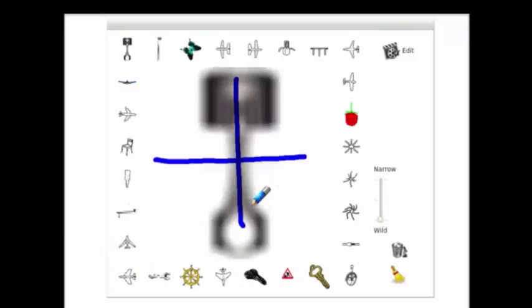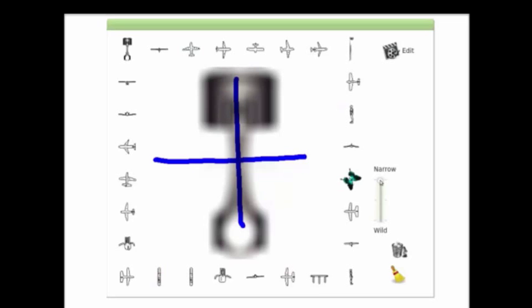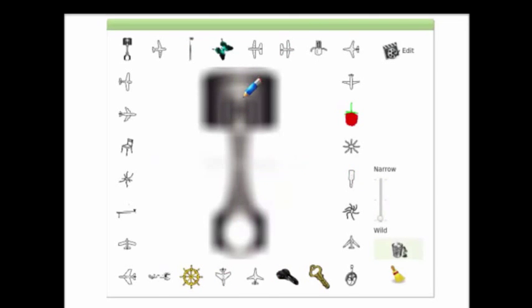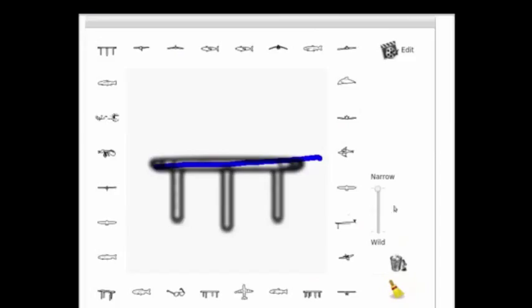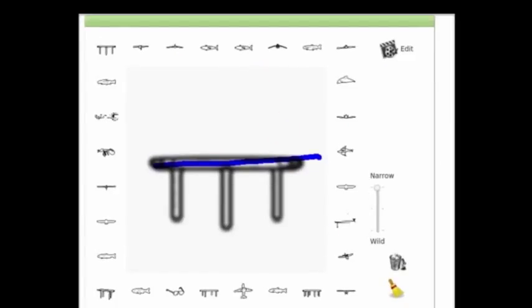Moving the creativity slider to wild generates a diverse variety of shapes, while moving the creativity slider to narrow gives a more specific output. The shape filter allows users to constrain their search to a specific visual category of shapes.